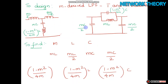In the pi section, the shunt arms each have mC/2, and the series arm has a parallel combination of an inductance mL and a capacitor (1 - m²/4m)·C. Comparing T and pi sections: the T section has mL/2 in series arms and a series resonant circuit in the shunt arm, while the pi section has mC/2 in shunt arms and a parallel resonant circuit in the series arm.